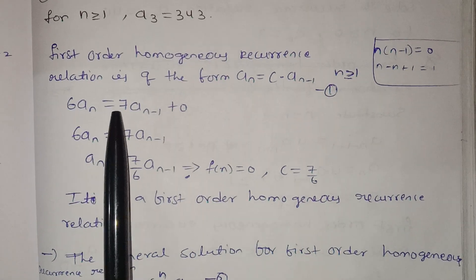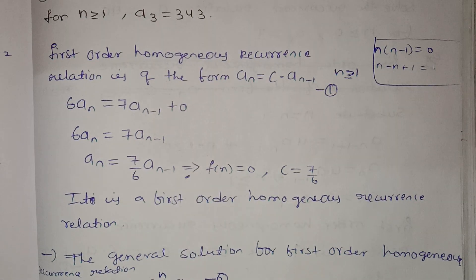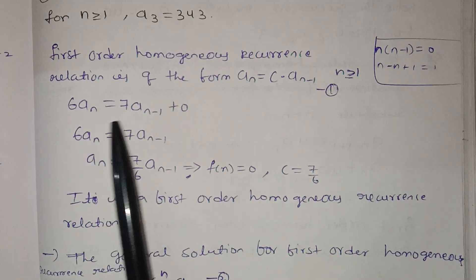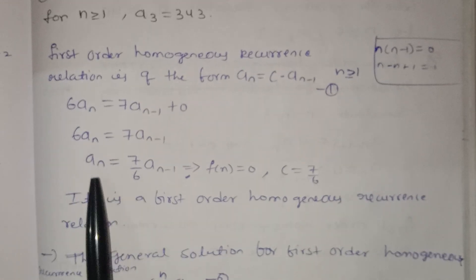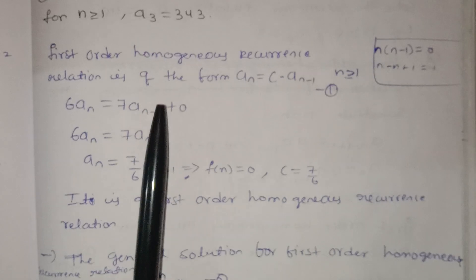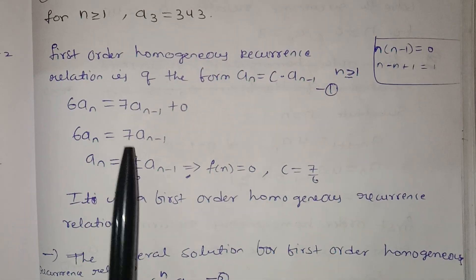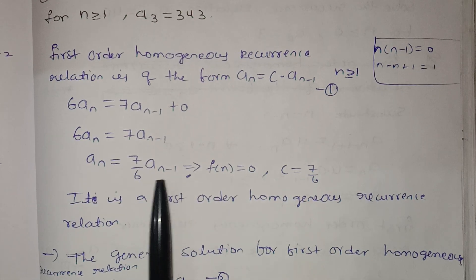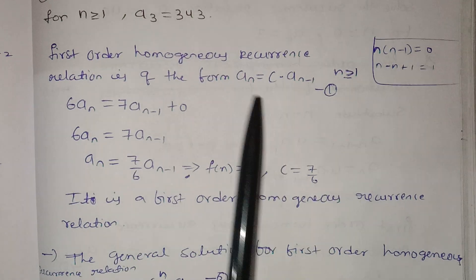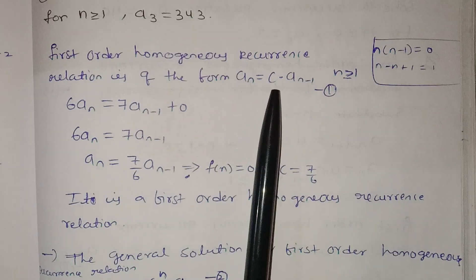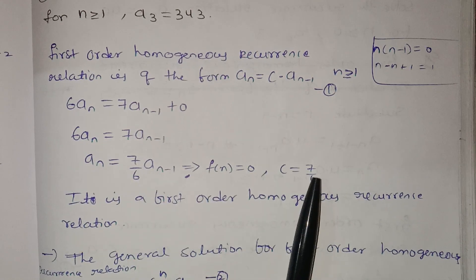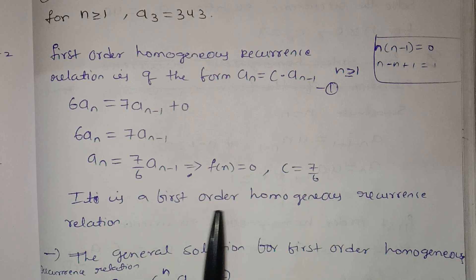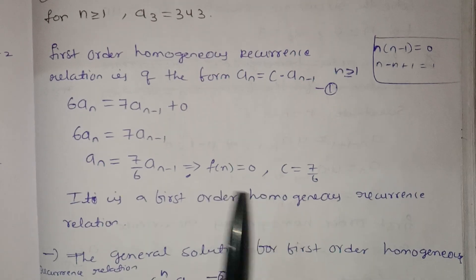We have 6aₙ − 7aₙ₋₁ = 0, which is a first-order homogeneous recurrence relation. Rewriting: 6aₙ = 7aₙ₋₁, so aₙ = (7/6) · aₙ₋₁. Therefore c = 7/6 and f(n) = 0, confirming it is a first-order homogeneous recurrence relation.